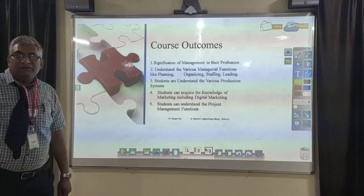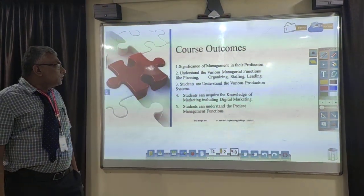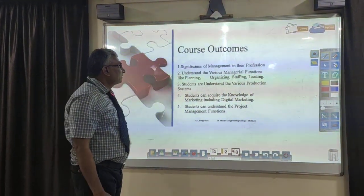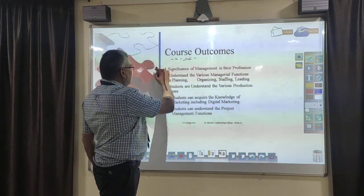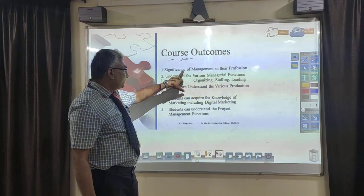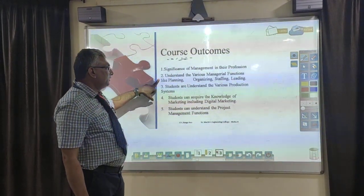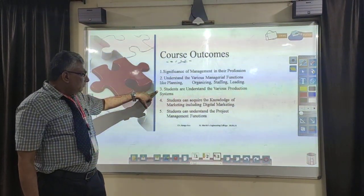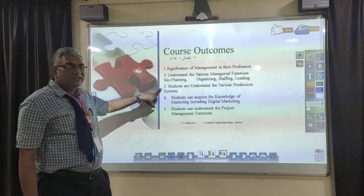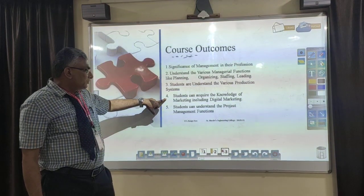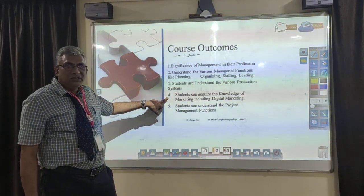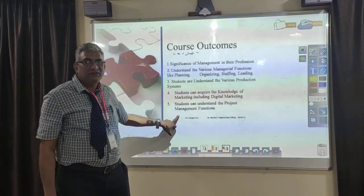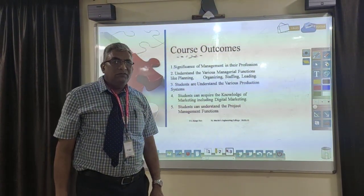What is the outcome of this course? Once you have gone through the syllabus, these are all the course outcomes. The first is the significance of management in the profession. The second is to understand the various managerial functions like planning, organizing, staffing, leading, and controlling. The third is to understand the various production systems. The fourth is to acquire knowledge of marketing, including digital marketing, which is an emerging area. The last is to understand the project management functions.